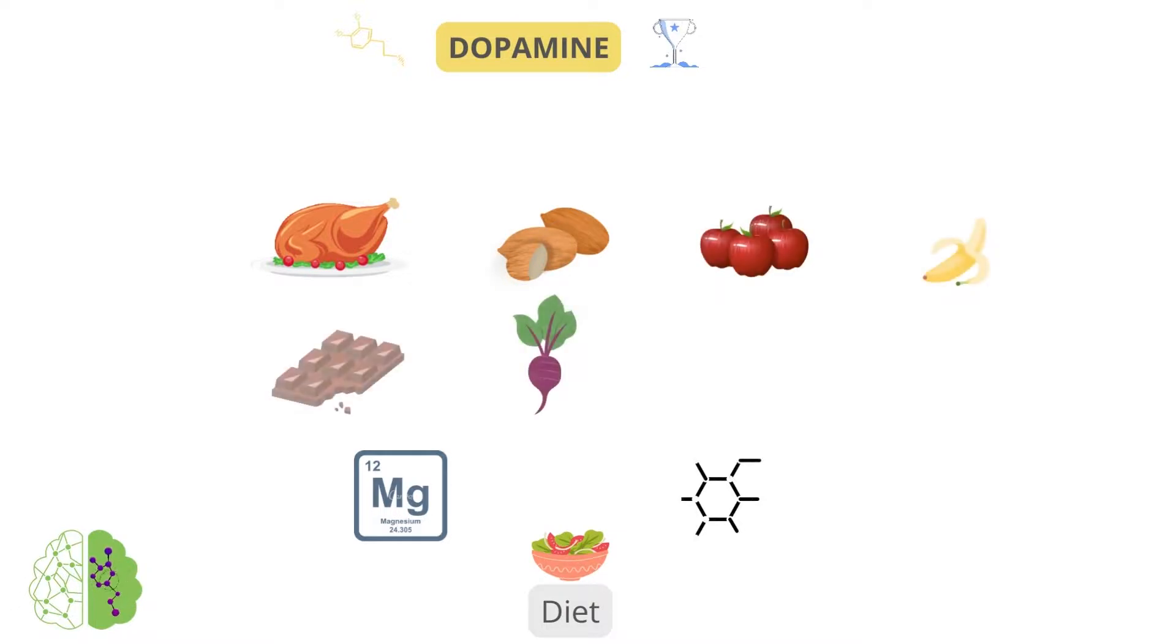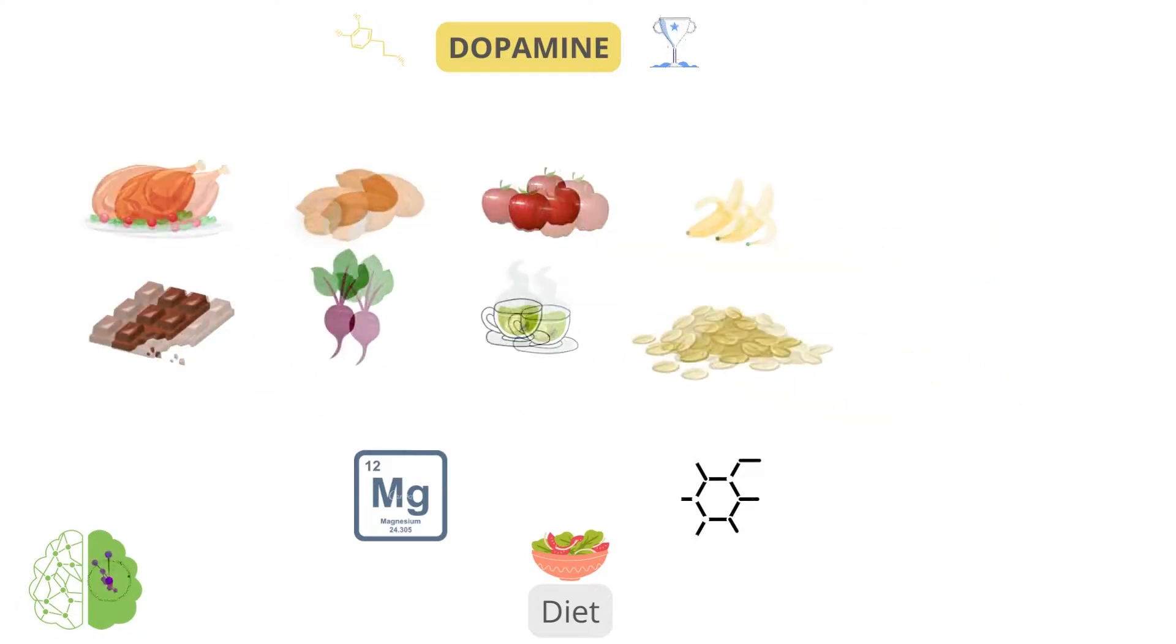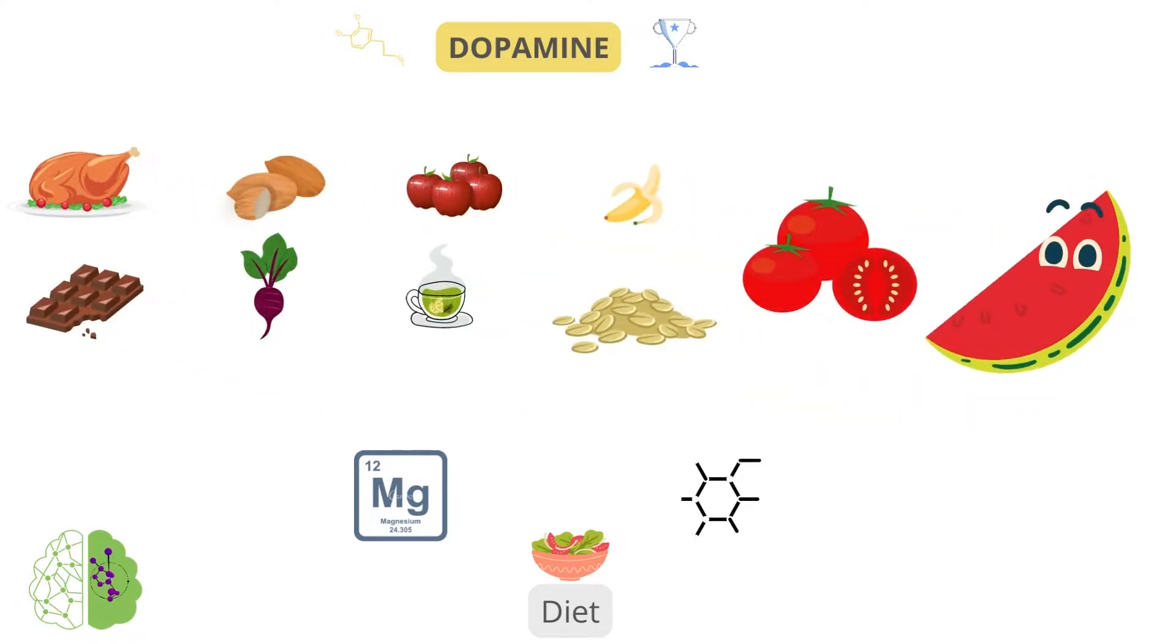Chicken, almonds, apples, avocados, bananas, beets, chocolate, green leafy vegetables, green tea, lima beans, oatmeal, oranges, peas, sesame and pumpkin seeds, tomatoes, turmeric, watermelon, and wheat germ are among the foods that have been shown to raise dopamine levels.